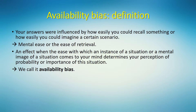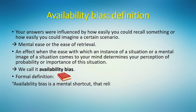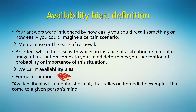That's why we call it availability bias. Availability means that an association is readily available in your memory and is easily retrievable. The formal definition of availability bias, or availability heuristic, as it appears on Wikipedia, is the following: a mental shortcut that relies on immediate examples that come to a given person's mind when evaluating a specific topic, concept, method, or decision.